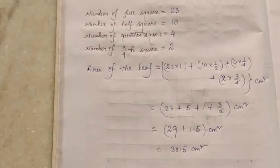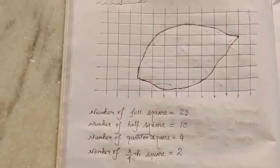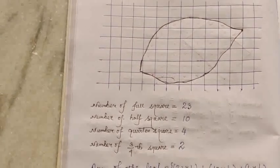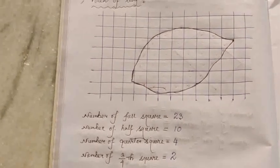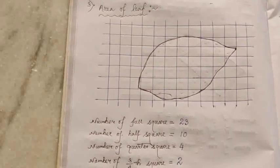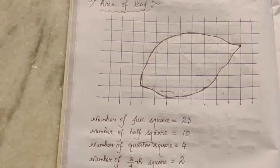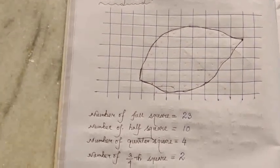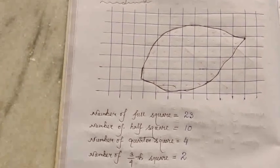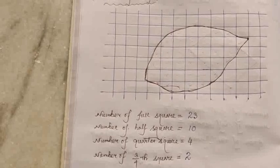So in this way we can find out the area of any irregular shape by using graph paper or square paper.